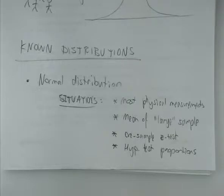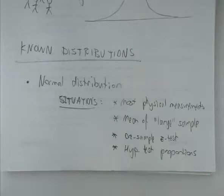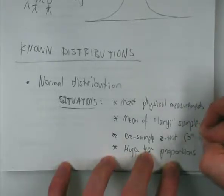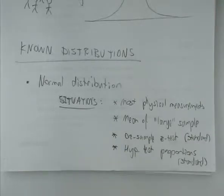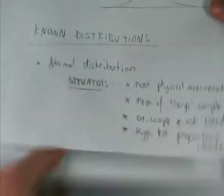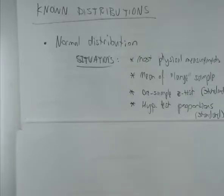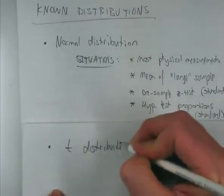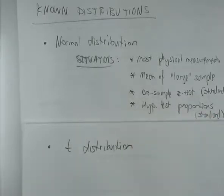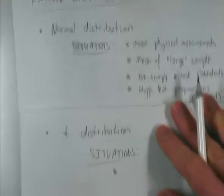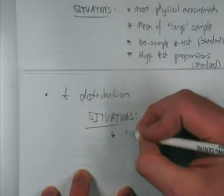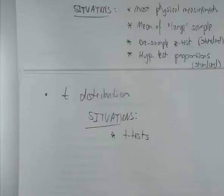These last ones are special — they're not just any normal distribution, they're the standard normal distribution. We also have the T distribution, and the only time you see a T distribution is when you do a hypothesis test. Situations include various T tests — the unpaired, the paired, and the one in regression. A T tends to happen in a situation where you know the mean but have to calculate some sort of standard deviation from your data.